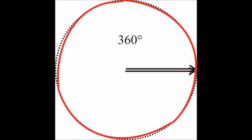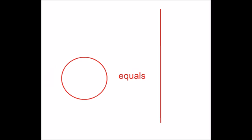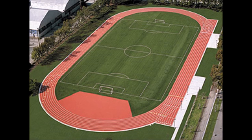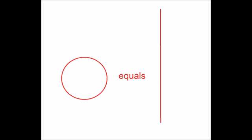If you unwind the circle into a straight line, the length of that line is called the circumference. Just like a track, the length of a circle appears longer in a straight line, even though it is the exact same length.